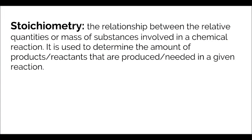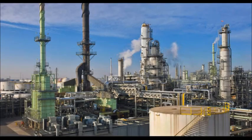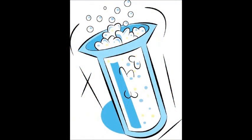Stoichiometry is the relationship between the relative quantities or mass of substances involved in a chemical reaction. In industrial processes, chemical reactions are often conducted using an excess of one reactant, unlike a classroom in which we work with exact stoichiometry quantities. Our project is similar to industrial processes. We will combine vinegar and baking soda in various quantities and identify the limiting and excess reactant in each situation through observing the amount of gas it generates.